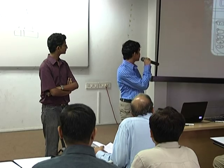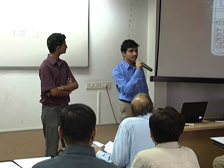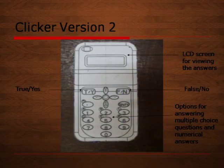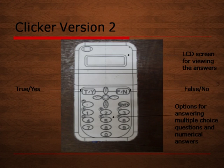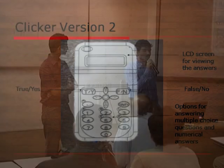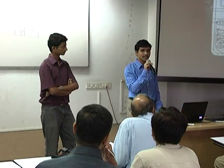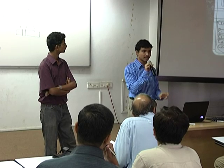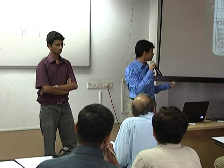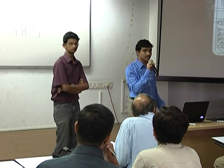This is clicker version 2, going to be developed at IIT Bombay, and this is the front view of it. The T and Y keys represent true and yes. The F/N key is false or no. The remaining keys are 1, 2, 3, 4, 5, 6 and above, called ABCDE, used to represent answer options.